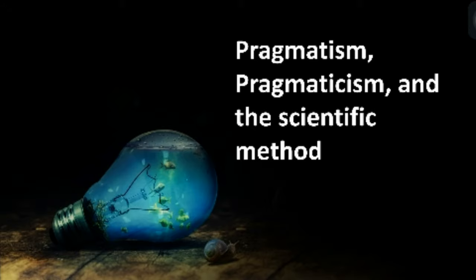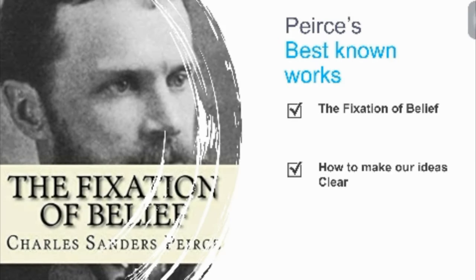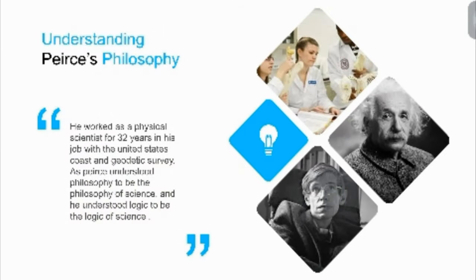Pragmatism, Pragmaticism, and the Scientific Method are Peirce's best-known works. The first, titled 'The Fixation of Belief,' defended the superiority of the scientific method, while the other, entitled 'How to Make Our Ideas Clear,' is a pragmatic approach toward clear concepts. To understand Peirce's philosophy more fully, we should consider that he worked as a physical scientist for 32 years with the United States Coast and Geodetic Survey. He understood philosophy to be the philosophy of science, and logic to be the logic of science.